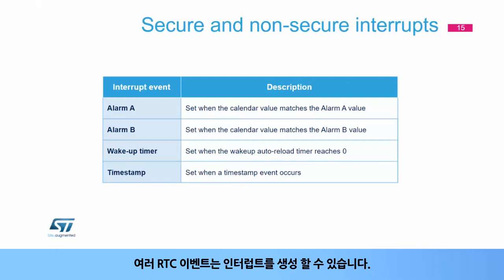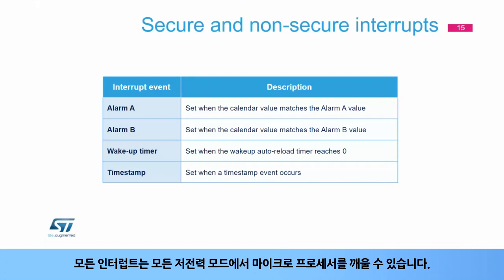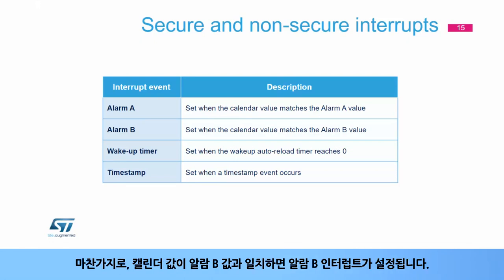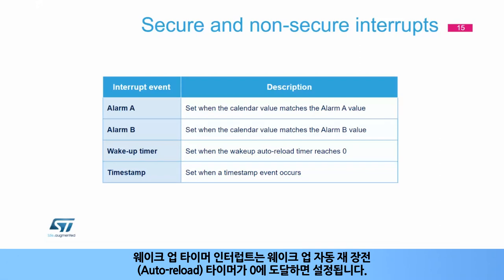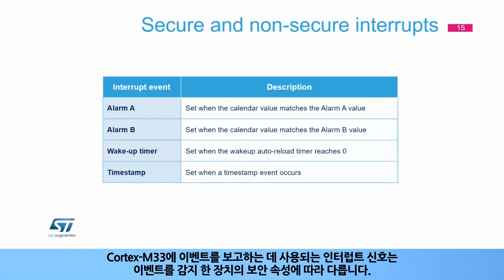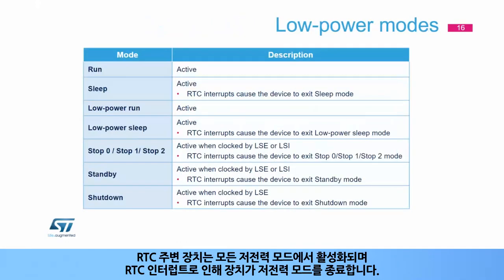Several RTC events can generate an interrupt, and all interrupts can wake the microprocessor from all low-power modes. The alarm A interrupt is set when the calendar value matches the alarm A value; similarly, alarm B interrupt is set when it matches the alarm B value. The wake-up timer interrupt is set when the auto-reload timer reaches 0. The timestamp interrupt is set when the timestamp event occurs. The interrupt signal used to report the event to the Cortex-M33 depends on the security attribute of the unit which detected it. The RTC peripheral is active in all low-power modes and RTC interrupts cause the device to exit low-power mode.